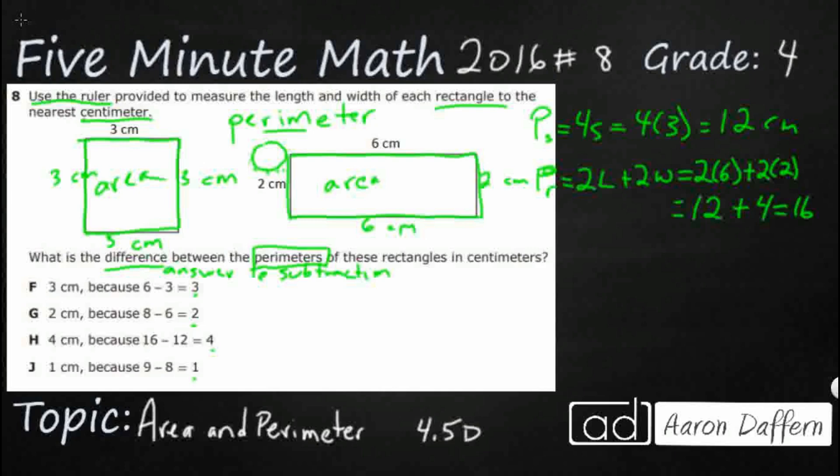And so they don't tell us which one to go first, we just have to know the bigger one goes first. So it's 16 minus 12 and our answer here is H4.